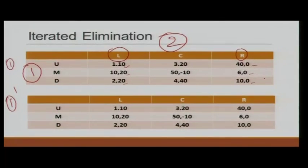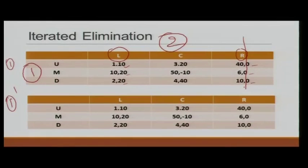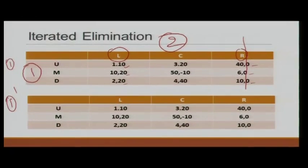A rational player would never play a dominated strategy. Right now, we are not interested in what this player would play, but what this player would not play — and we know player 2 will not play R, so we can eliminate R. Because of common knowledge, not only are player 1 and 2 rational, but player 1 knows player 2 is rational, and vice versa. So player 1 knows player 2 will never play R, and we can remove that column entirely.